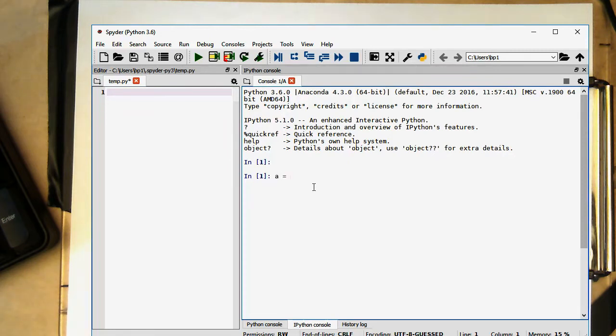So a equals 4 comma 5 comma and then centimeter. So let's have a look what's inside. So we see here 4 or 5 in centimeter.